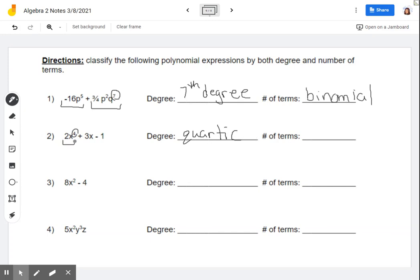And number of terms, we're looking at one term, two terms, three terms. So three terms is going to be called a trinomial.